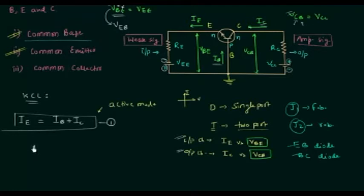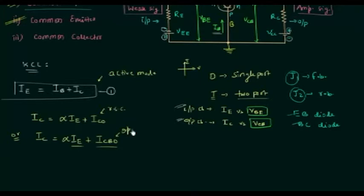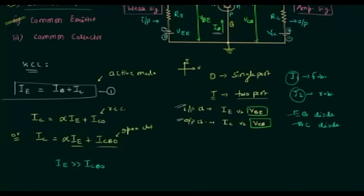The next thing is the collector current. IC is equal to alpha times IE plus ICBO, where ICBO is the reverse saturation current. The B in ICBO stands for common base configuration, and O stands for open circuit because we measure this current when the emitter terminal is open. When we compare IE and ICBO, the emitter current is much greater than the reverse saturation current because ICBO is due to minority charge carriers, which are very small in number. So we can neglect ICBO and write IC equal to alpha times IE.